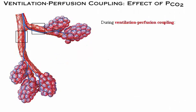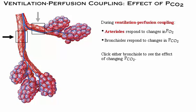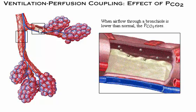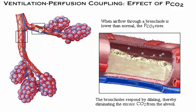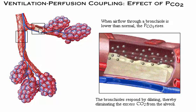During ventilation-perfusion coupling, the arterioles respond to changes in PO2. The bronchioles, on the other hand, respond to changes in PCO2. When airflow through a bronchiole is lower than normal, the PCO2 rises. The bronchioles respond by dilating, thereby eliminating the excess carbon dioxide from the alveoli.